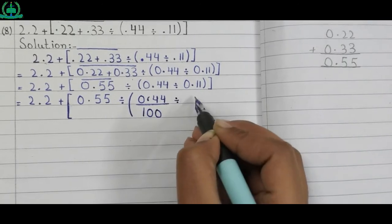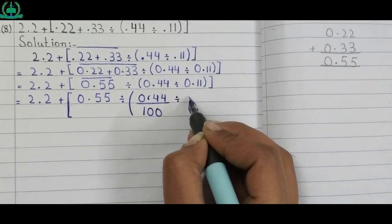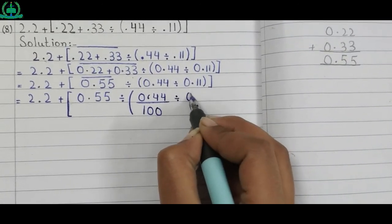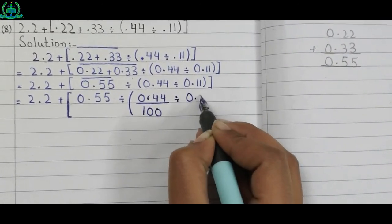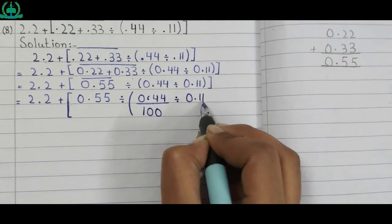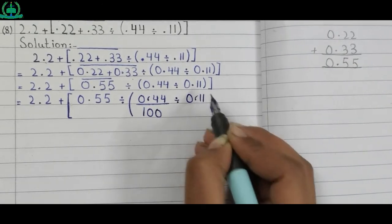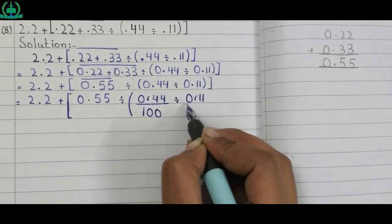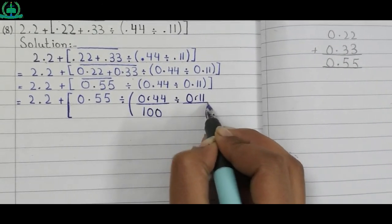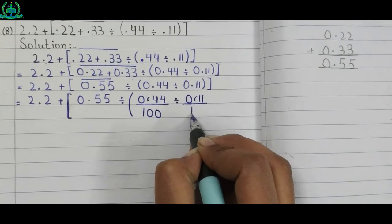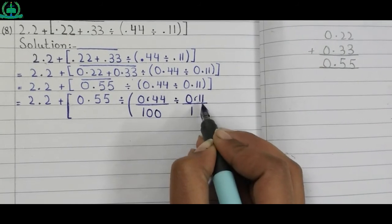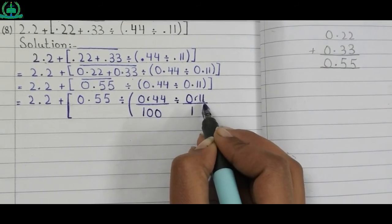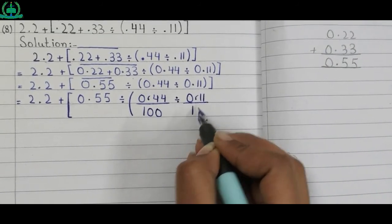Divide — first we remove the decimal. When we remove the decimal we put one in the denominator — there are two digit places after the decimal, so we put two zeros after one.